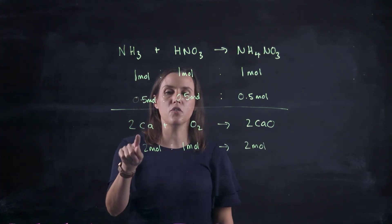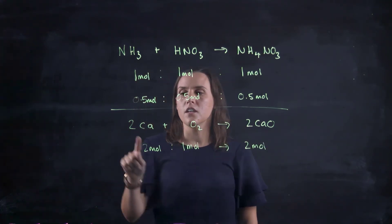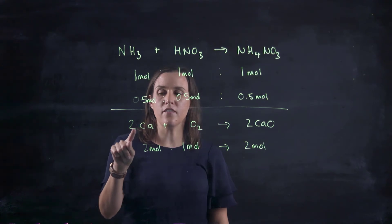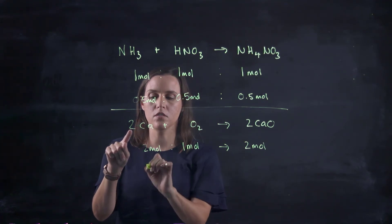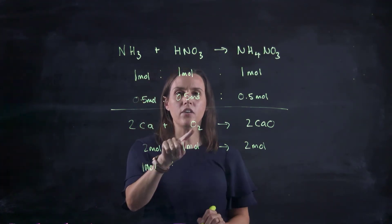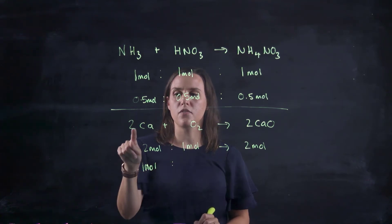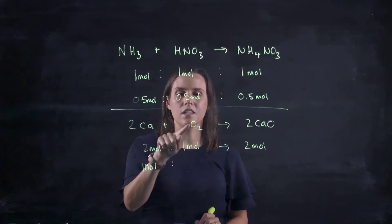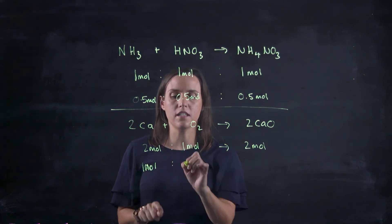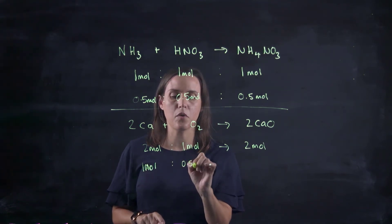So my ratio is two to one to two. So if I, instead of having two mole of this, had one mole, then how many O2 would I have? So if this is two, this is half the amount. So if I've got one, this is going to be 0.5 mole.